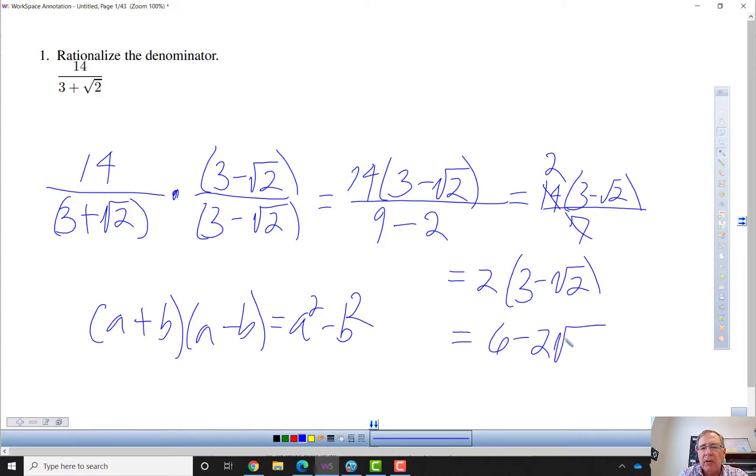And I'll go ahead and distribute, because that's what the answer key does. So 6 minus 2 square roots of 2.